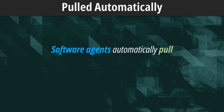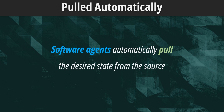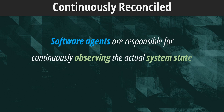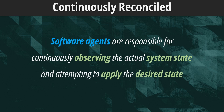Once a change has been committed and approved, software agents automatically pull the desired state declarations from the source. Software agents are also responsible for continuously observing the actual system state and attempting to apply the desired state.